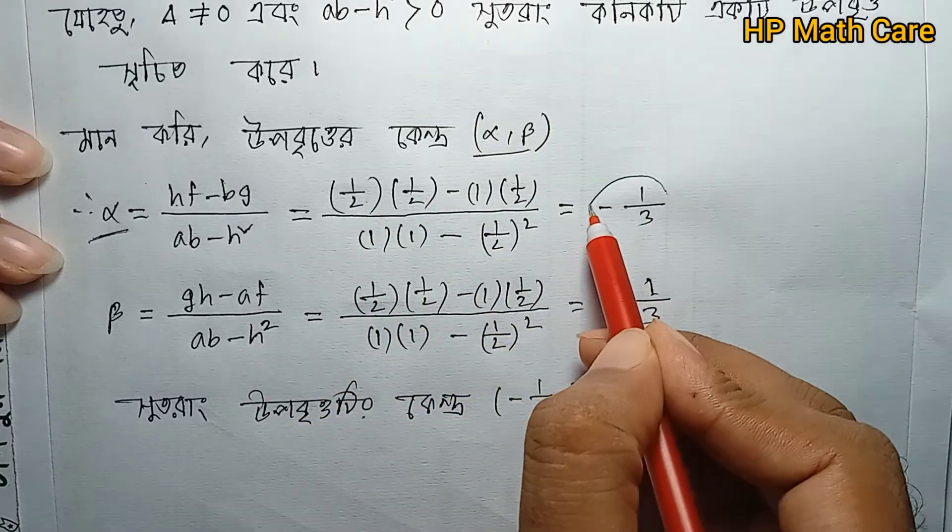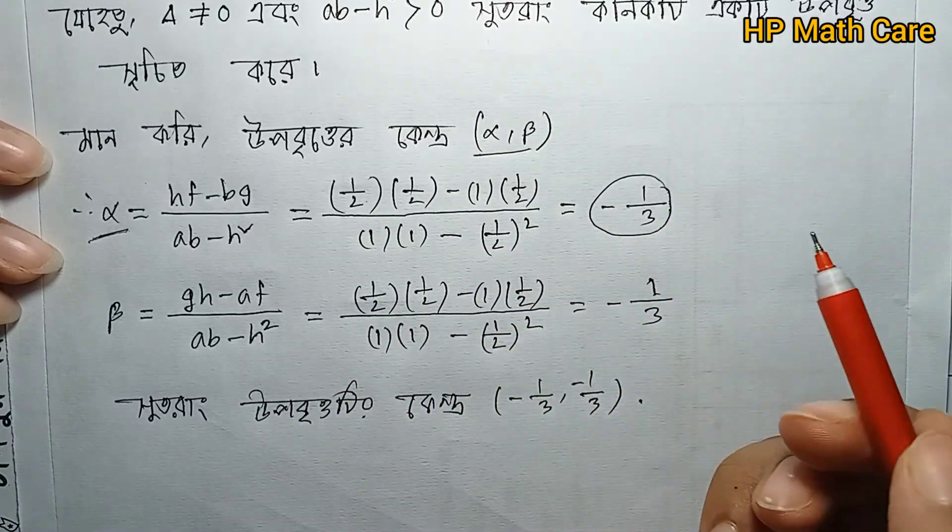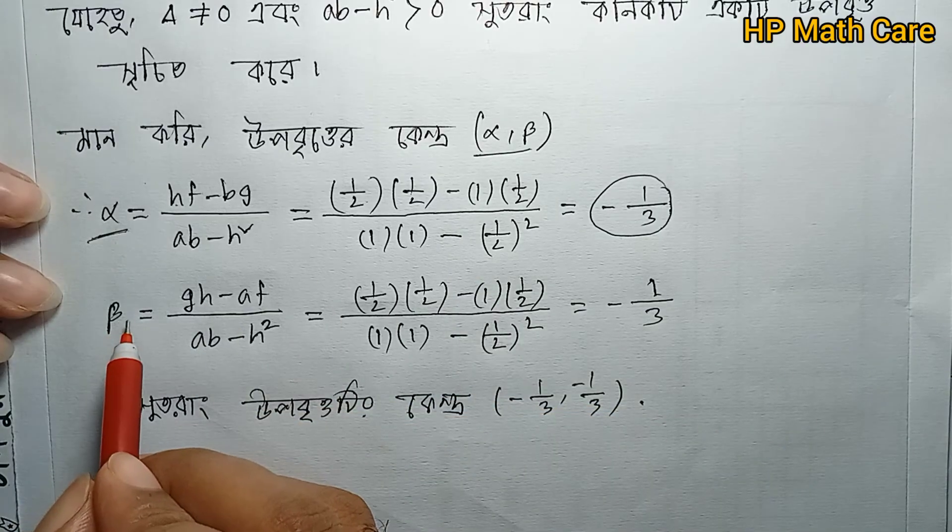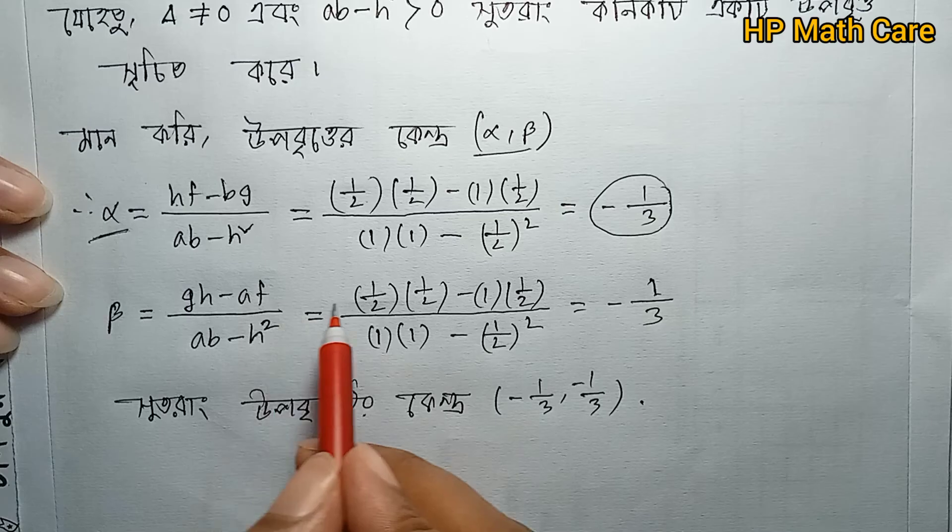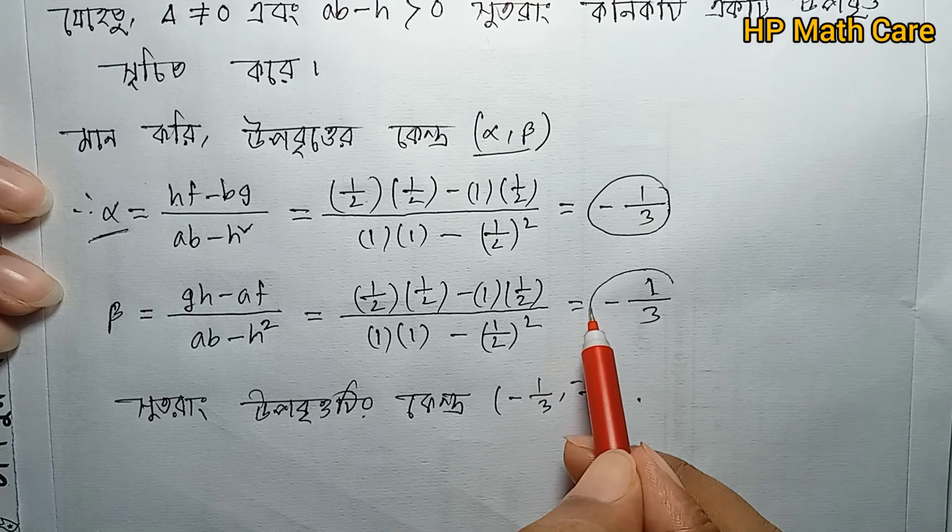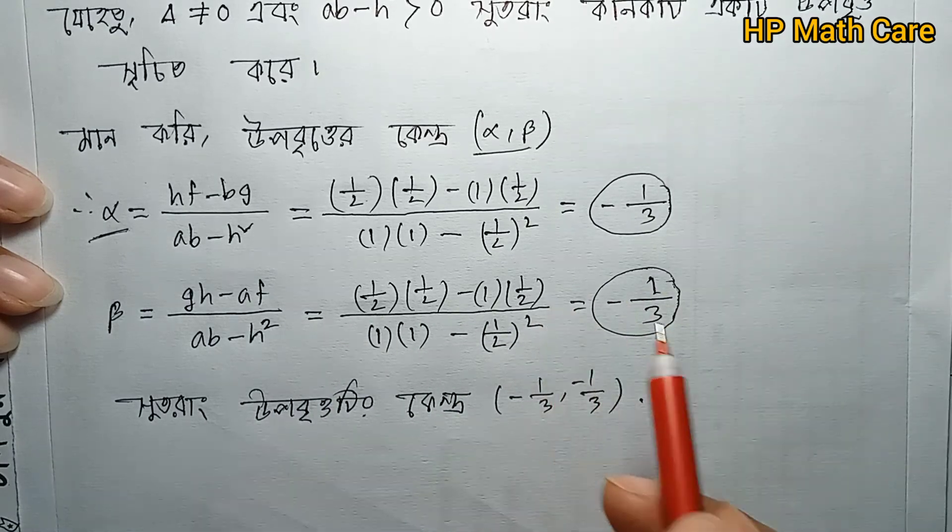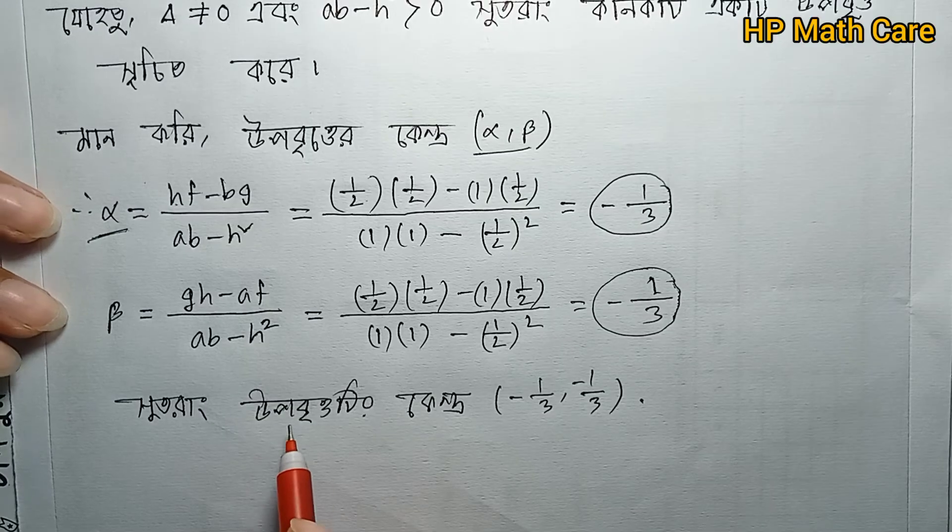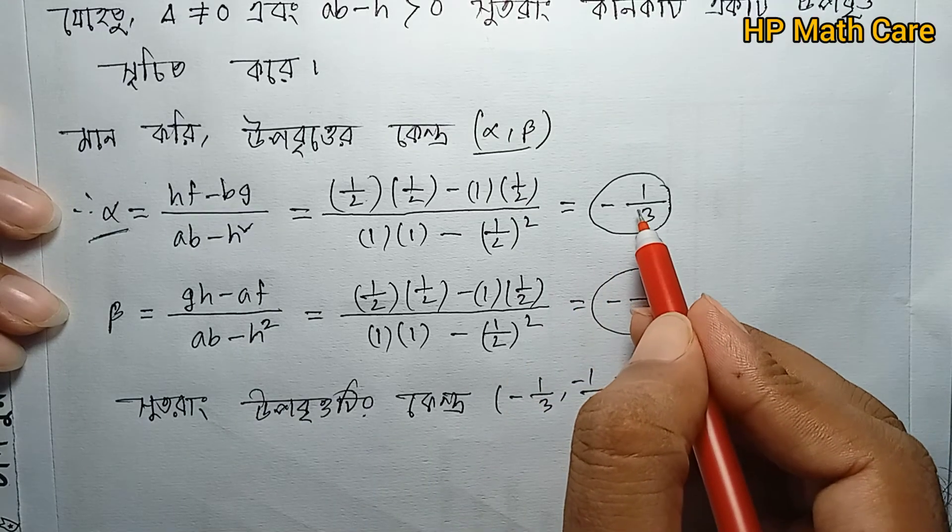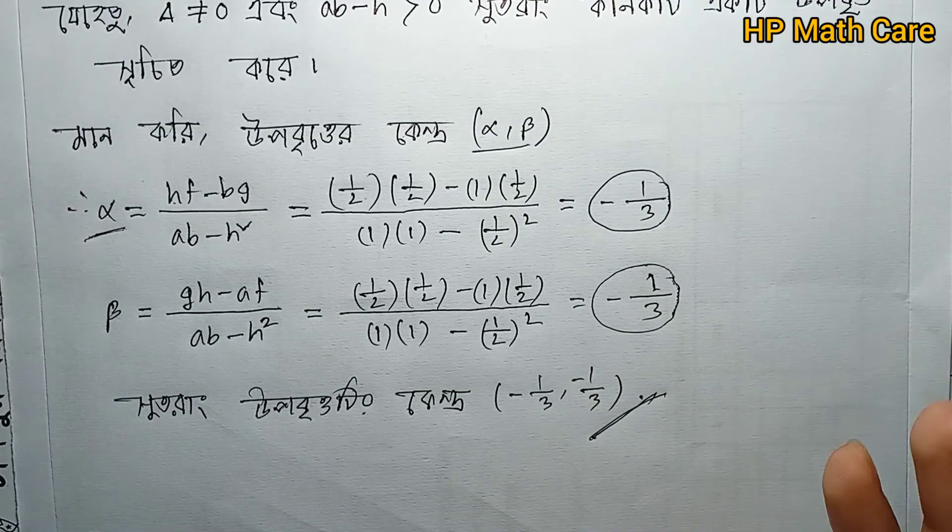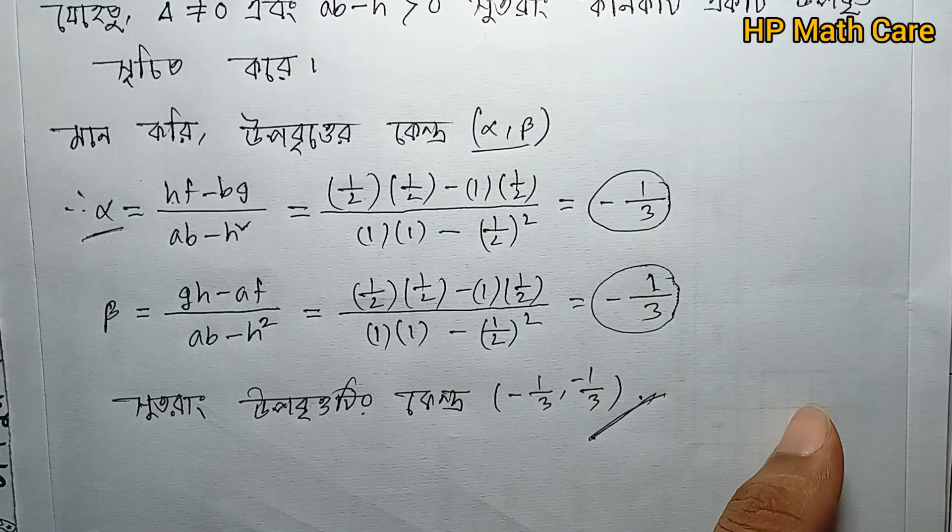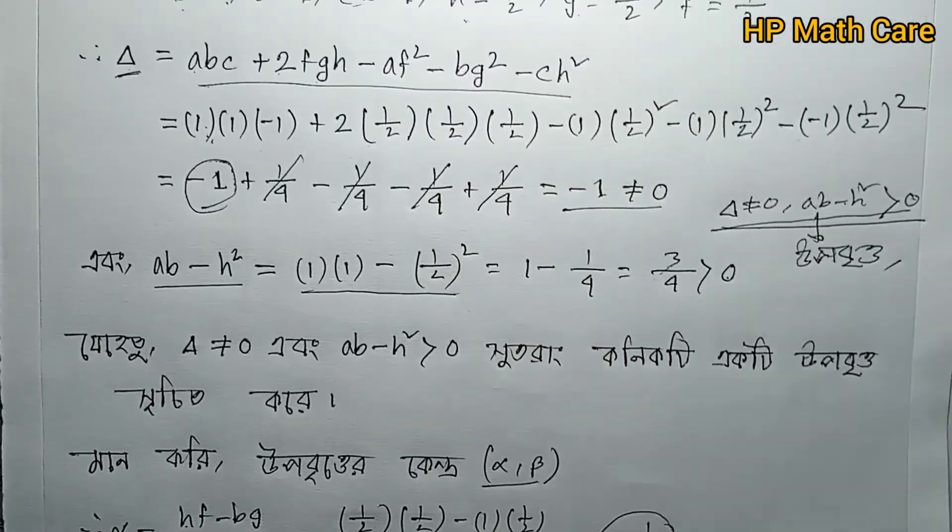Alpha = (hf - bg)/(ab - h²) = ((1/2)(1/2) - (1)(1/2))/(3/4) = (1/4 - 1/2)/(3/4) = (-1/4)/(3/4) = -1/3. Similarly, beta = -1/3. The center is (-1/3, -1/3).